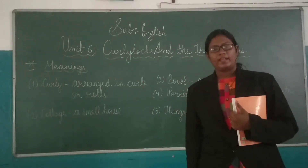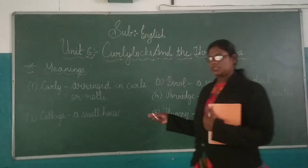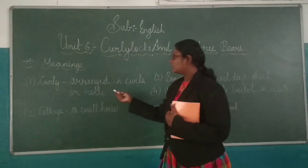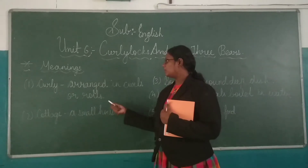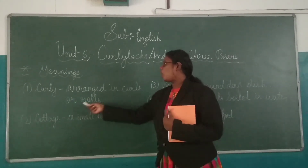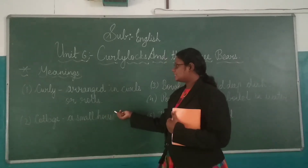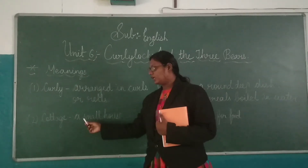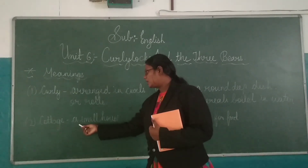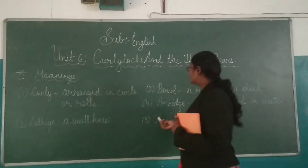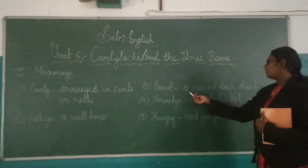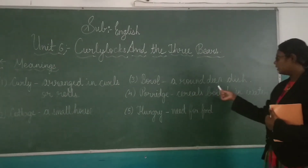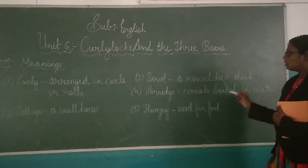Now I am going to write the meanings. First word is Curly — C-U-R-L-Y. What is the meaning of Curly? Arranged in curls or rows. Second word is Cottage — meaning: a small house. Third, Bowl — a round dish. Now Porridge.